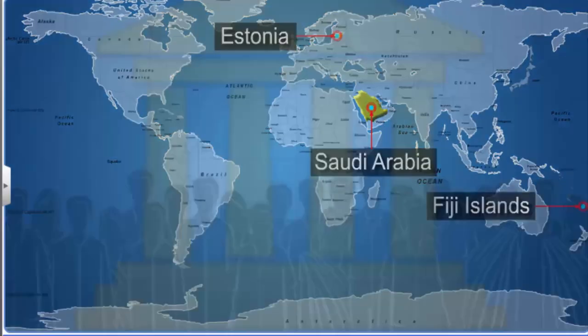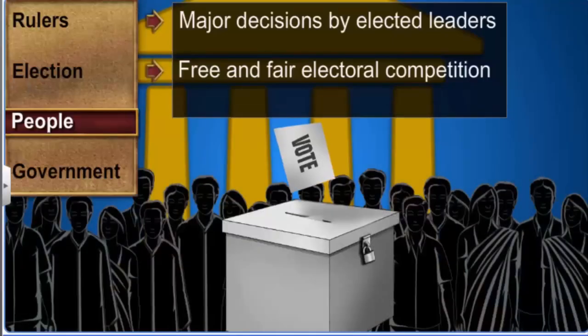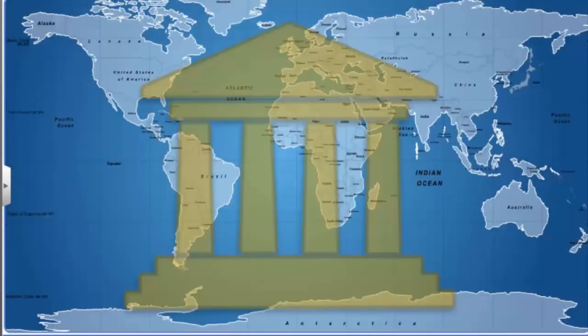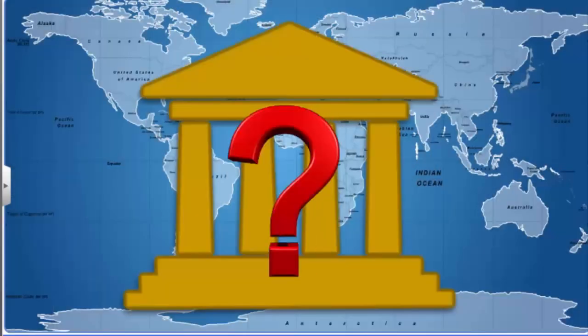Thus, in a democracy all adults who are citizens of the country should be allowed to vote, with each vote having equal value. What happens if the popular government turns out to be undemocratic?